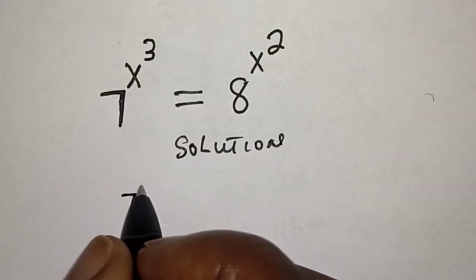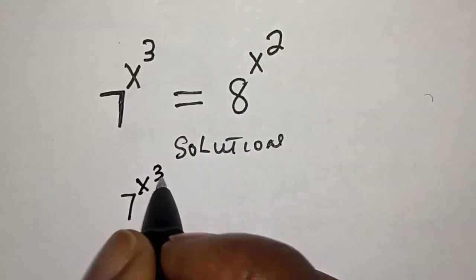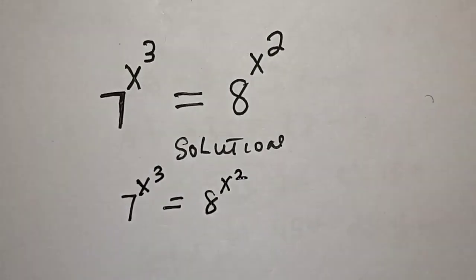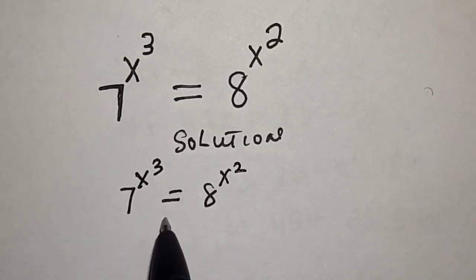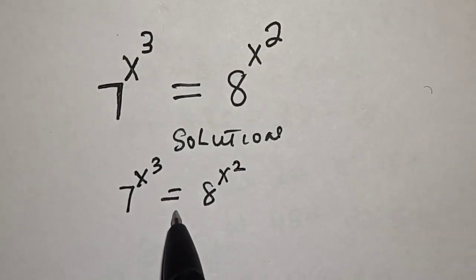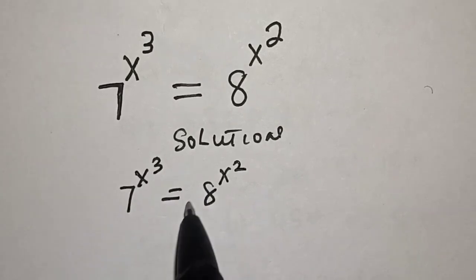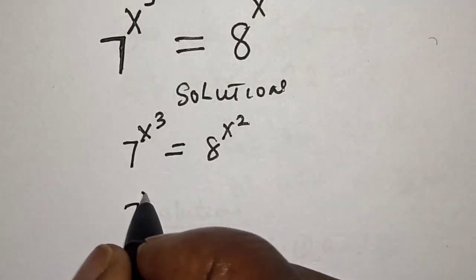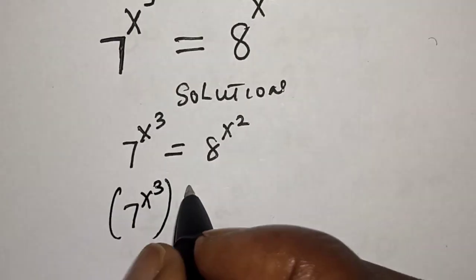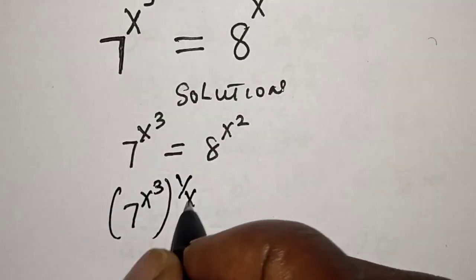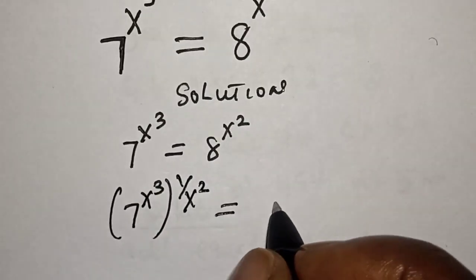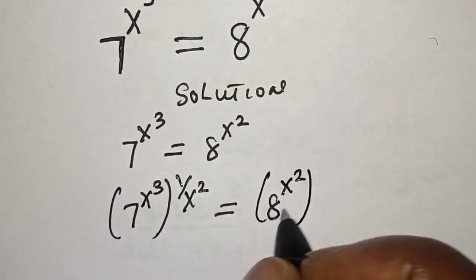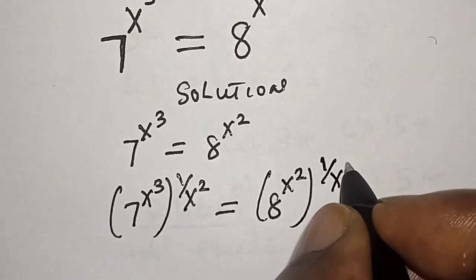7 raised to power s cubed is equal to 8 raised to power s squared. Now let's multiply the power of both sides by 1 over s squared. That is 7 raised to power s cubed multiplied by 1 over s squared is equal to 8 raised to power s squared multiplied by 1 over s squared.